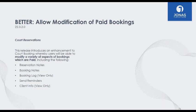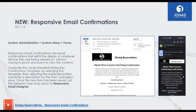Previously you couldn't click through on a paid booking — it wouldn't launch anything; it just indicated the booking had been paid. Now when you click it, you can see the booking log, client info, modify notes, and send reminders. Reminders will go out automatically per schedule, but if you want to send one immediately, you now have that capability from within the paid booking. Moving to Dining Reservations: we've added the ability to send out responsive email confirmations — responsive meaning the email works equally well on a desktop or mobile device.